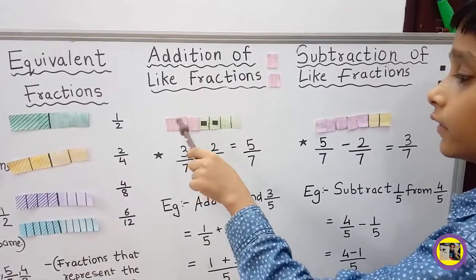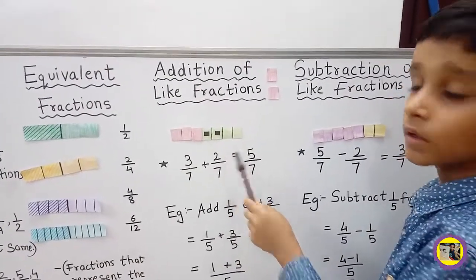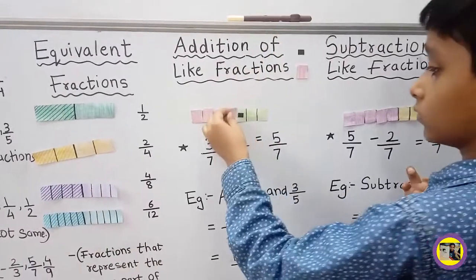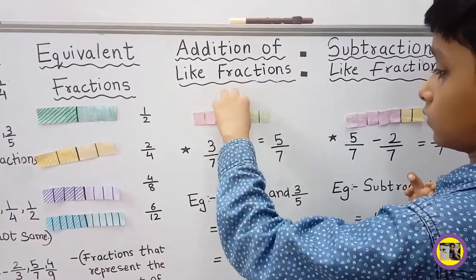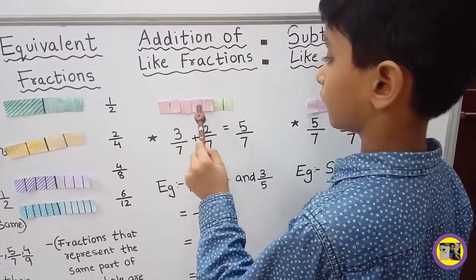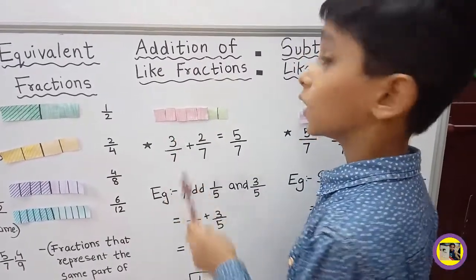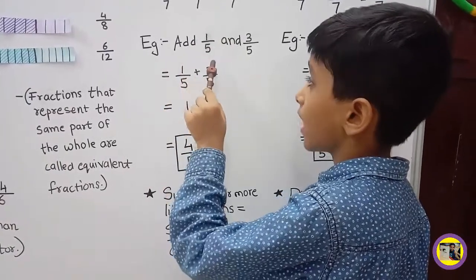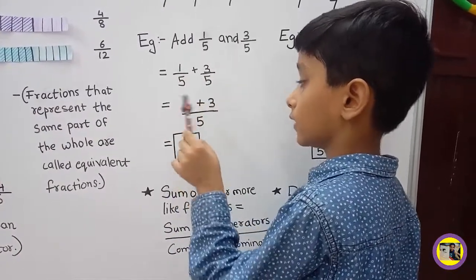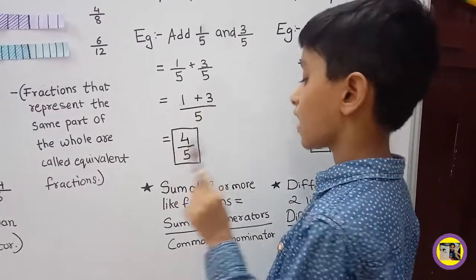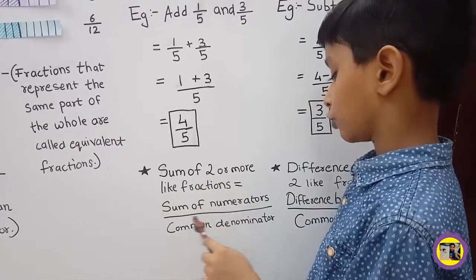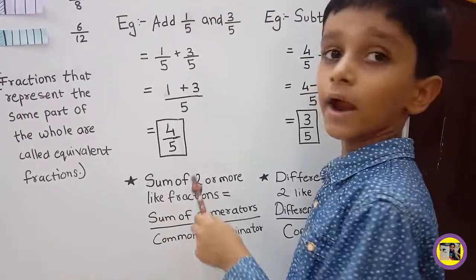Addition of Like Fractions: There are a total of 7 pieces and 3 are shaded. Now we have to shade 2 more. Let's count: 1, 2, 3, 4, 5. The answer is 5 upon 7. For example, add 1 upon 5 and 3 upon 5. This equals 1 plus 3 upon 5, so the answer is 4 upon 5. The sum of 2 or more like fractions is equal to the sum of the numerators upon the common denominator.